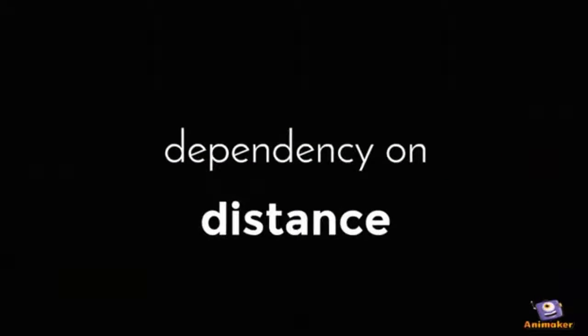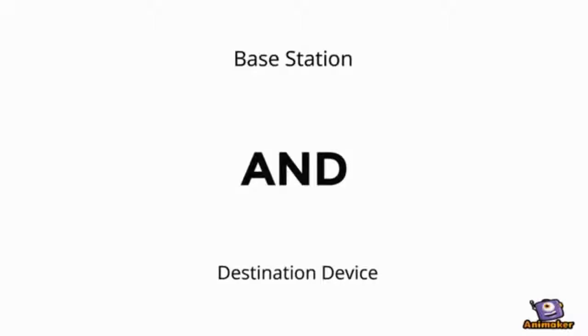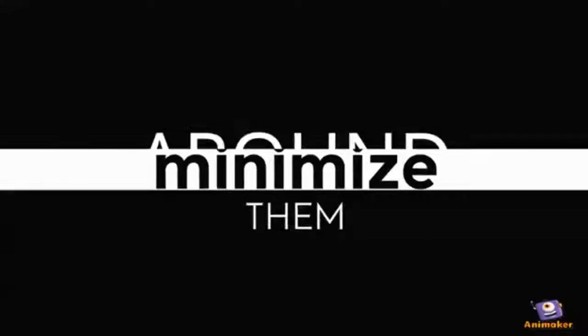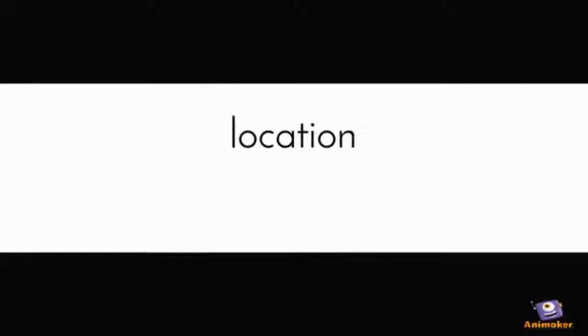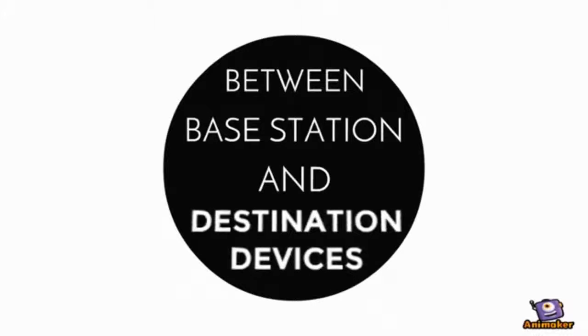Relay system has a dependency on the distance on both base station and destination device. Theoretically speaking, in order to minimize the loss from the environment around the destination device, the location of the relay system should be exactly between the base station and destination device using the midpoint assumption, right?